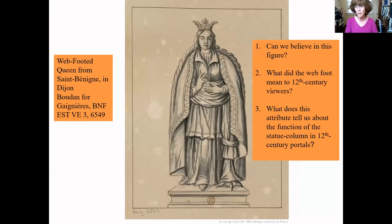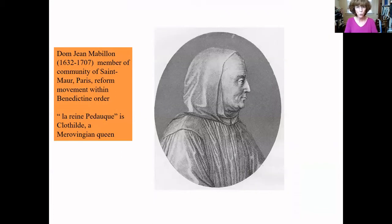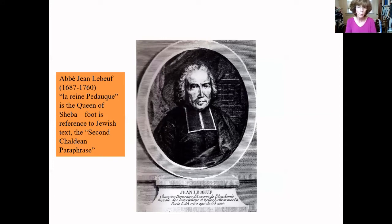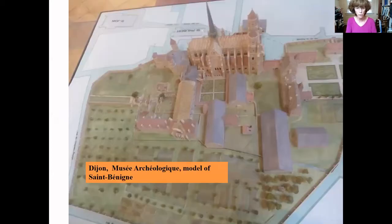All of these portals are destroyed, which brings us to my first question of whether we can believe in this figure. The Webfoot Queen was very famous in the 18th century. She was described by multiple antiquarians and her identity was hotly debated. For the Maurist monk Jean Mabillon, who believed the column figures represented the historic kings and queens of France, the queen with the foot of a goose — the Pied d'oie — was Clotilde, a Merovingian queen. The Abbé Jean Lebeuf believed all column figures were from the Old Testament, and to him she was the Queen of Sheba, and the curious foot was a reference to an obscure Jewish tradition.